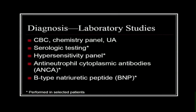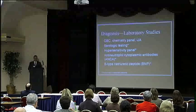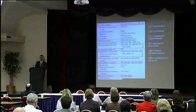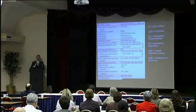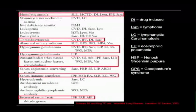Regarding laboratory studies, basic labs including CBC, chemistry panel, and urinalysis are standard. Serological testing is done on many patients and occasionally reveals unexpected findings. A hypersensitivity panel is used in appropriate patients, as well as ANCA — antineutrophil cytoplasmic antibodies — and B-type natriuretic peptide in selected patients. Generally for IPF there are no specific laboratory findings that confirm the diagnosis, but this slide outlines laboratory findings seen across interstitial lung diseases, with those relevant to IPF highlighted in red.